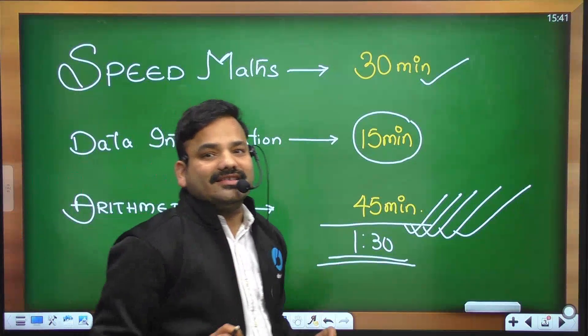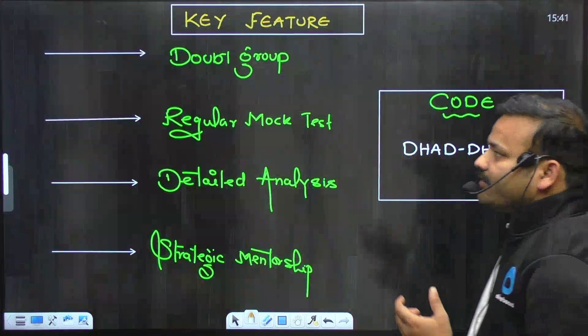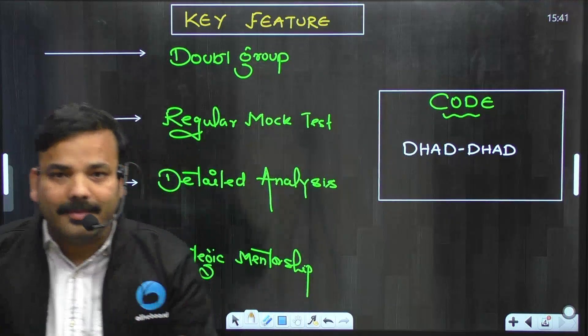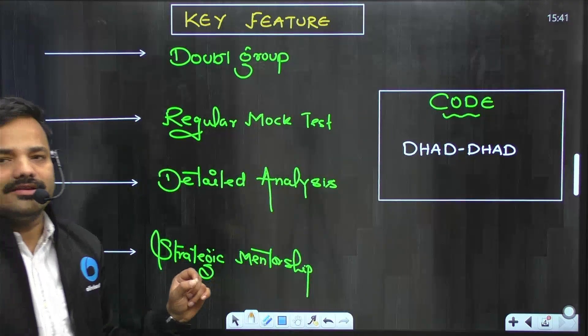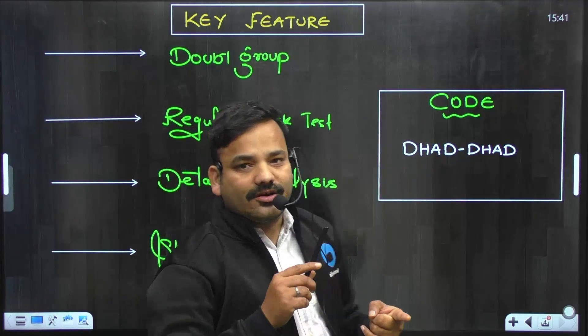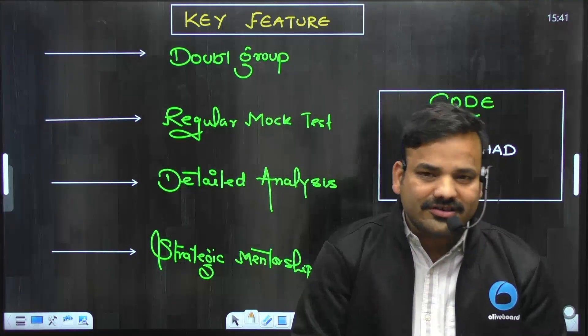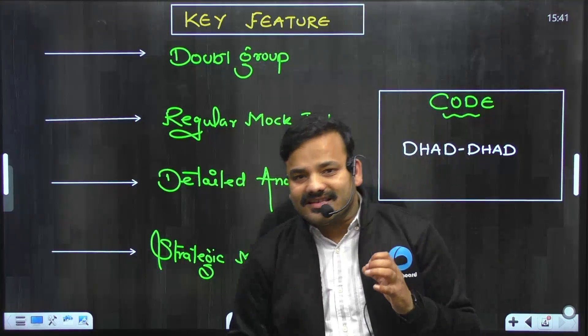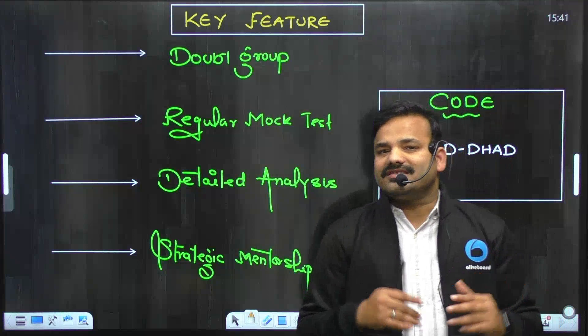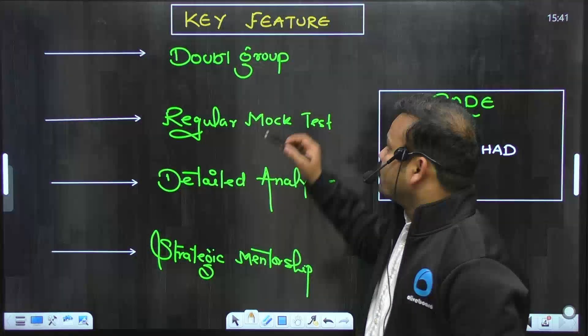Hamari strategy kaise rahegi? Toh hamari strategy aapki Olive Board par maths ki aise rahegi. Toh mera sabse pehla main intention rehta hai ki jaisi aapka batch launch hota hai, main on the very first day doubt group bana deta hoon, kyunki mujhe aisa lagta hai ki agar bachcha questions solve kar raha hai toh uske paas doubts jarur aayenge. Us doubt group mein, WhatsApp ke doubt group mein, bachchon ke beech mein ek healthy competition hota hai, ek dusre kya answers dete hain, aur usi group mein main aapko relevant questions bhi bhejta chala jata hoon, aur agar koi question agar bachche se nahi banta toh main bata deta hoon. Toh yeh doubt group ho gaya.